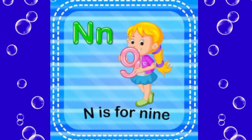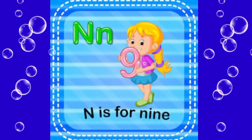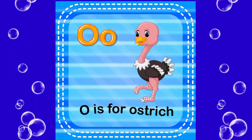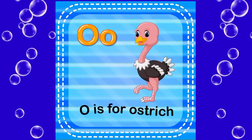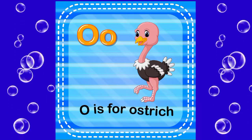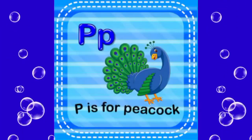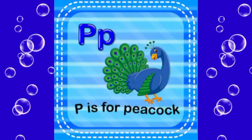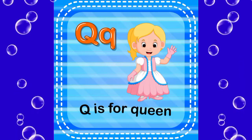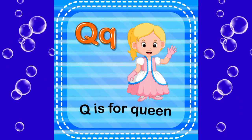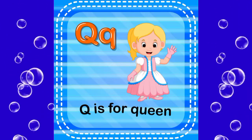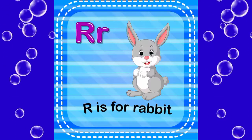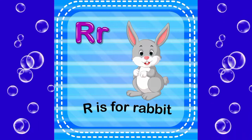N is for nine, O is for ostrich, P is for picker, Q is for queen, R is for rabbit.